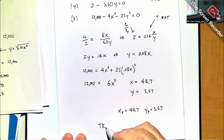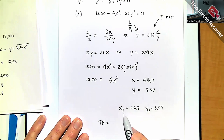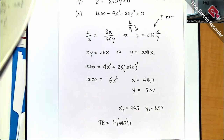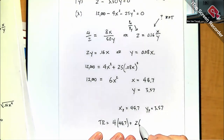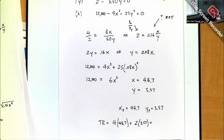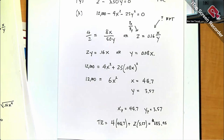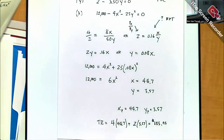Calculating the revenue earned: PX·XP + PY·YP = 4 × 44.7 + 2 × 3.57 = 178.8 + 7.14 ≈ $185.95. That's the total revenue generated from selling production at international prices.